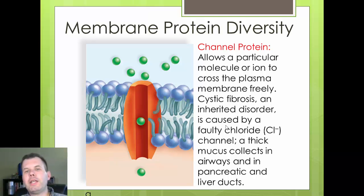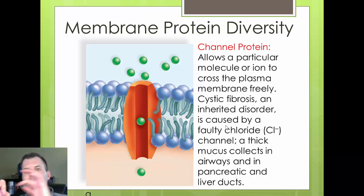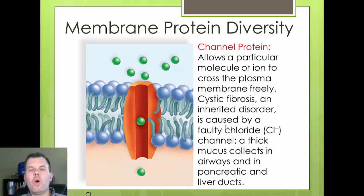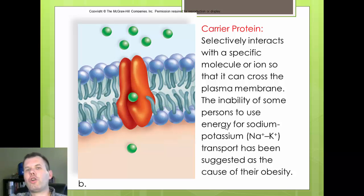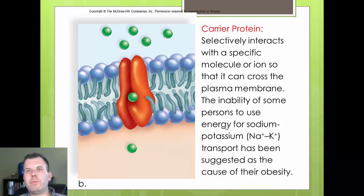A channel protein is a protein that has a hole - think of a donut or a straw. It allows things to get in and out of the cell easily because there's a hole formed inside the membrane. An example is an aquaporin, which allows water to move in and out of the membrane very easily. A carrier protein lends its hand to a molecule - like helping a little kid or an old lady across the street - grabs onto the molecule and brings it into the membrane.